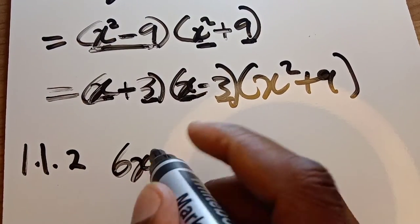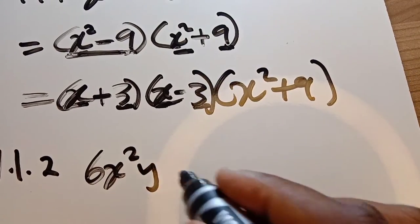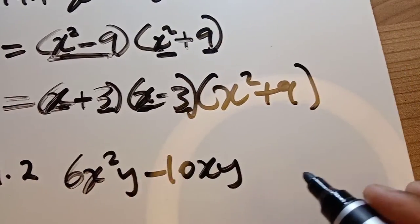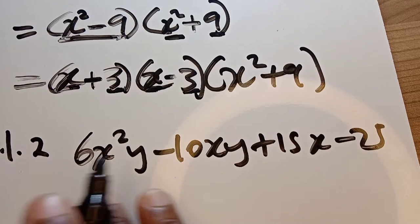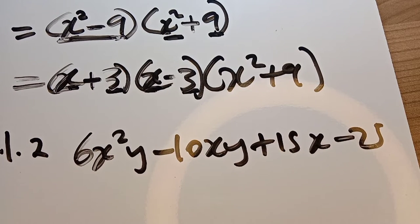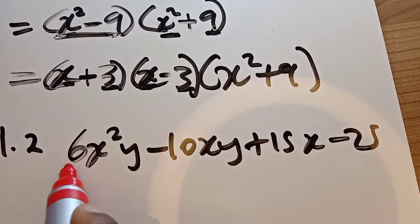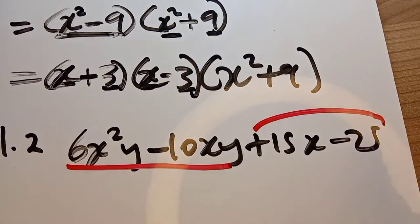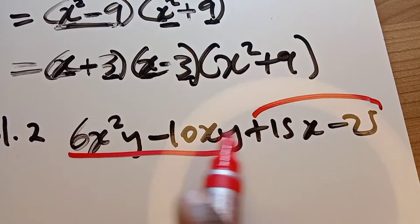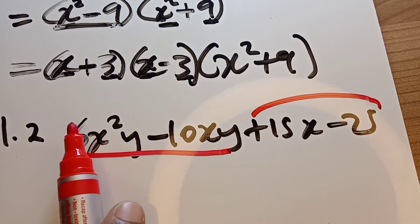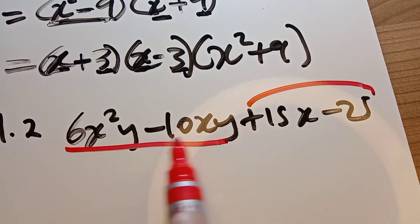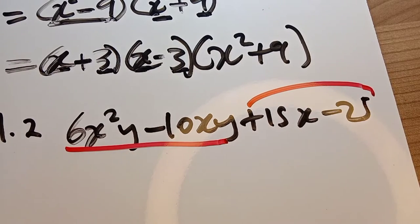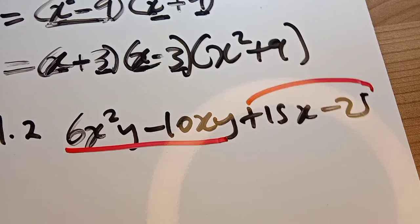Now let's go to 1.1.2. We have 6x squared y minus 10xy plus 15x minus 25. When we get an expression of this nature we factorize by grouping. We group the first term with the second and the third with the fourth — though it's not always the case that you must group them this way; sometimes you may need to try different groupings.